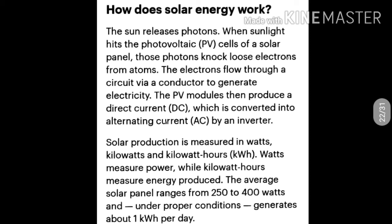How does solar energy work? The sun releases photons. When the sunlight hits the PV cells of solar panels, those photons knock loose electrons from atoms. The electrons flow through a circuit by a conductor to generate electricity. The PV modules then produce a direct current (DC), which is converted into alternating current (AC) by an inverter.